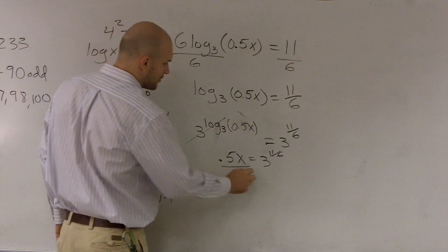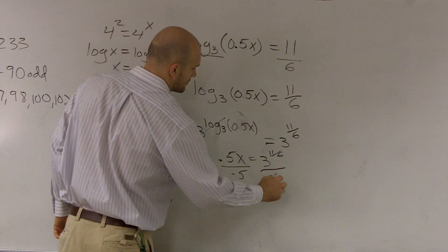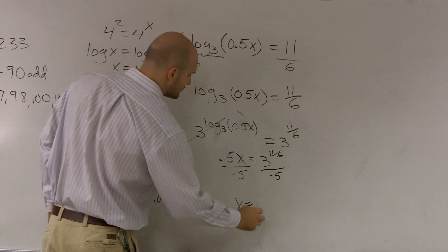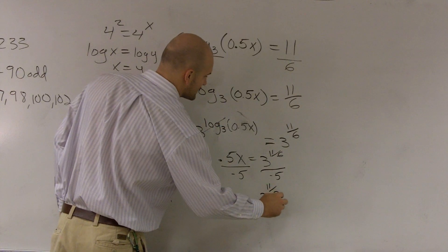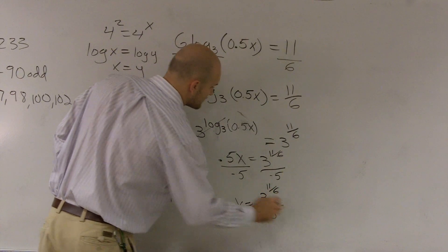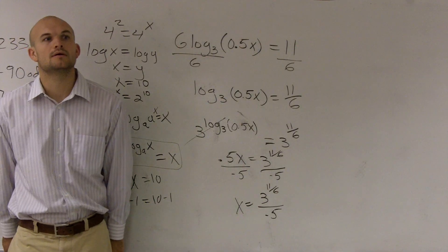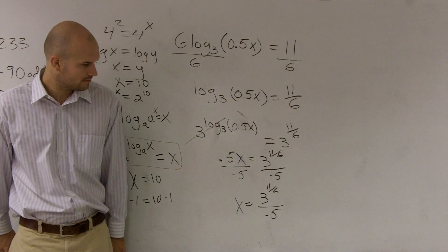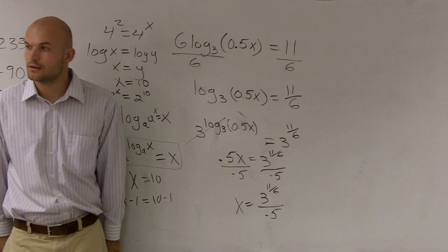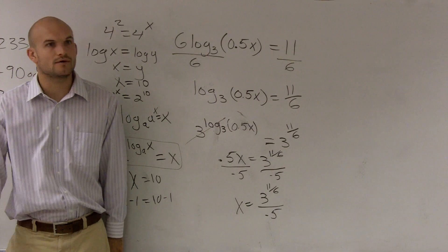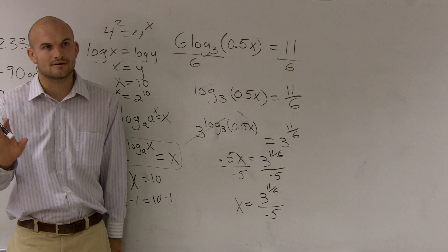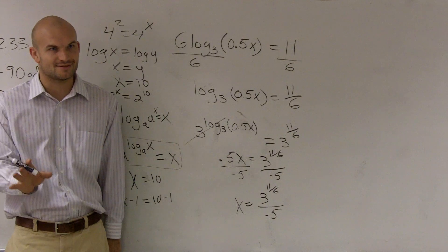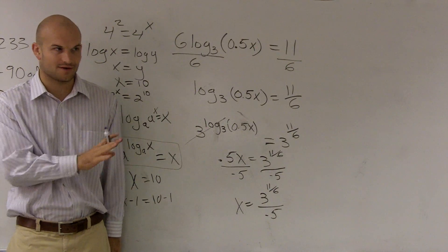And then from here, I just divide by 0.5. So, therefore, x equals 3 to 11 over 6 divided by 0.5. Students discussing: That's not right, though. You got 2. But they have a 2 in front of the 3. You get the same answer. Hold on. We'll just go ahead and look at the answer. I'll just go through it, and I'll look at the answer.